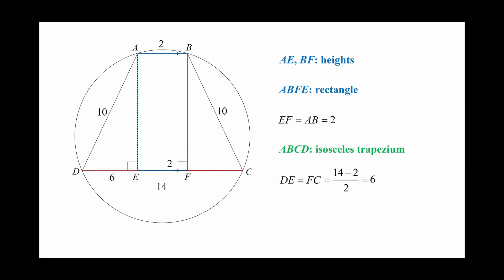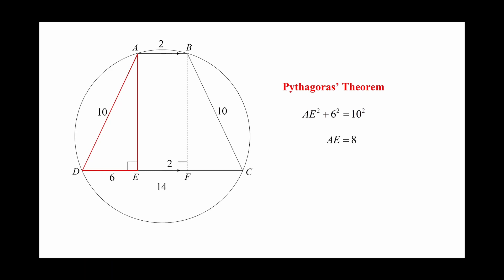Now, let's focus on the red triangle ADE. We can use the Pythagoras theorem to find the length of the height AE. AE square plus 6 square is equal to 10 square. So AE is equal to 8.